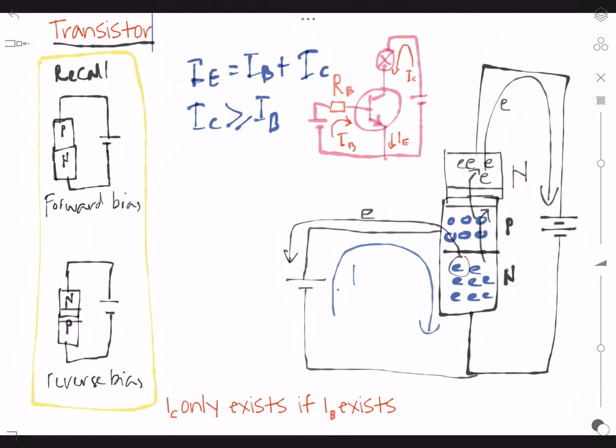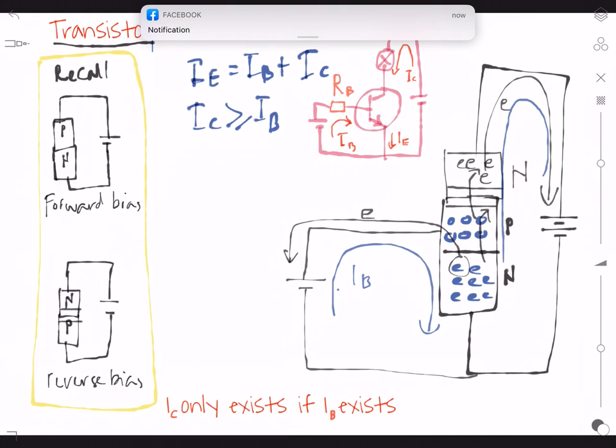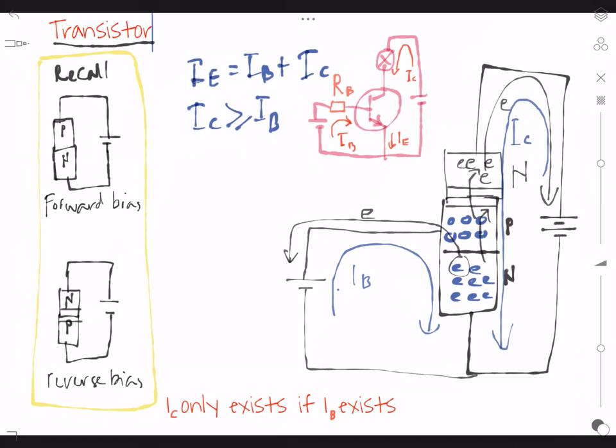And we call this IB, base current. And we have current flow in opposite direction of electron here and we call this IC. It stands for collector current. And you can see I base and collector current, now they will combine to produce IE, stands for emitter current. So that's why we have this formula.